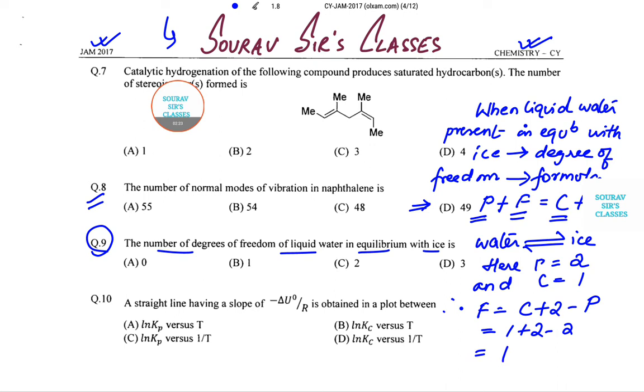That means B will be the correct answer to this particular question. Next, we move on to question number 10. Now question number 10 says a straight line having a slope of minus delta U not by R is obtained in a plot between what.